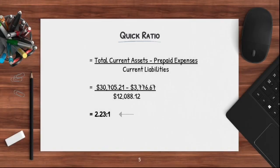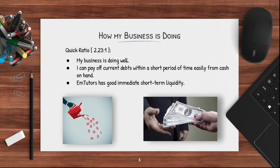When subtracting my current assets by the prepaid expenses and then dividing that answer by the total current liabilities, I got 2.2321 as my quick ratio. This shows that my business can pay off current debts within a short period of time easily from cash on hand. It means that it has a good immediate short-term liquidity.